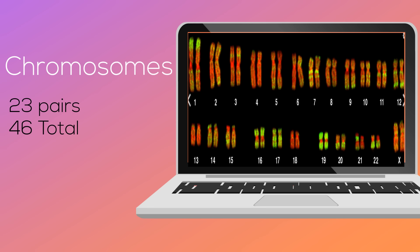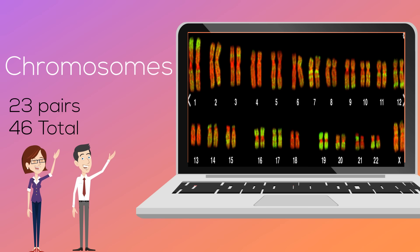For each trait, you get some of the information from mom and some from dad. As a result, you may inherit different forms of the same trait. These different forms are alleles.